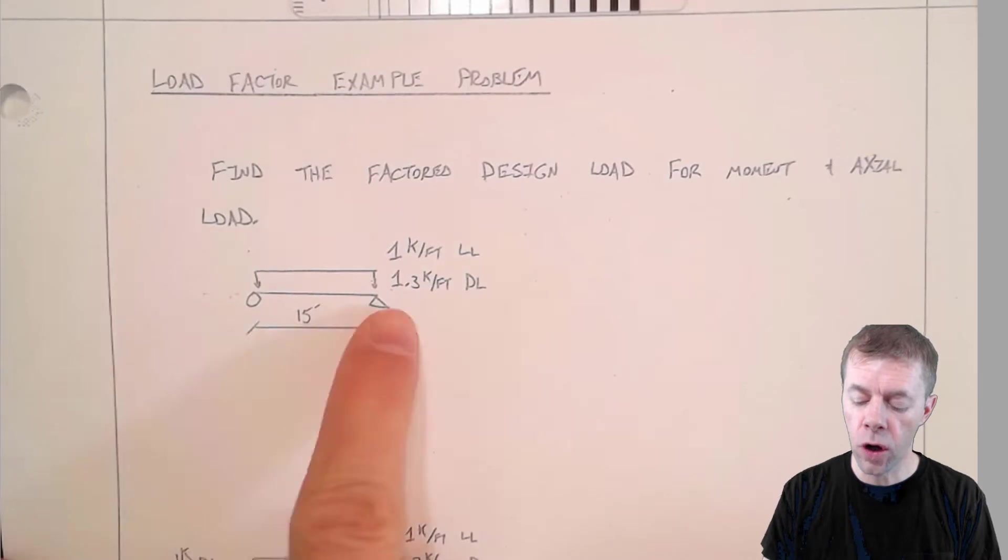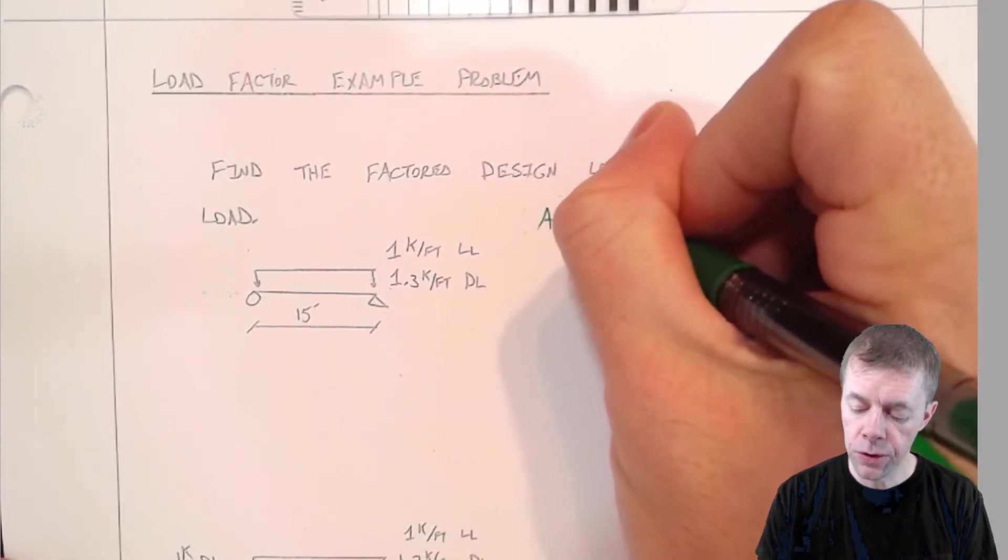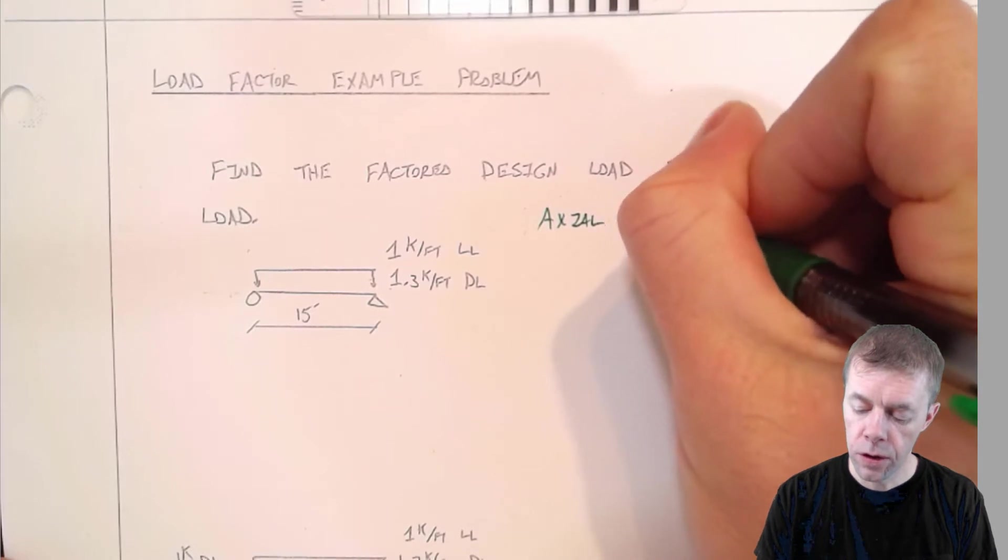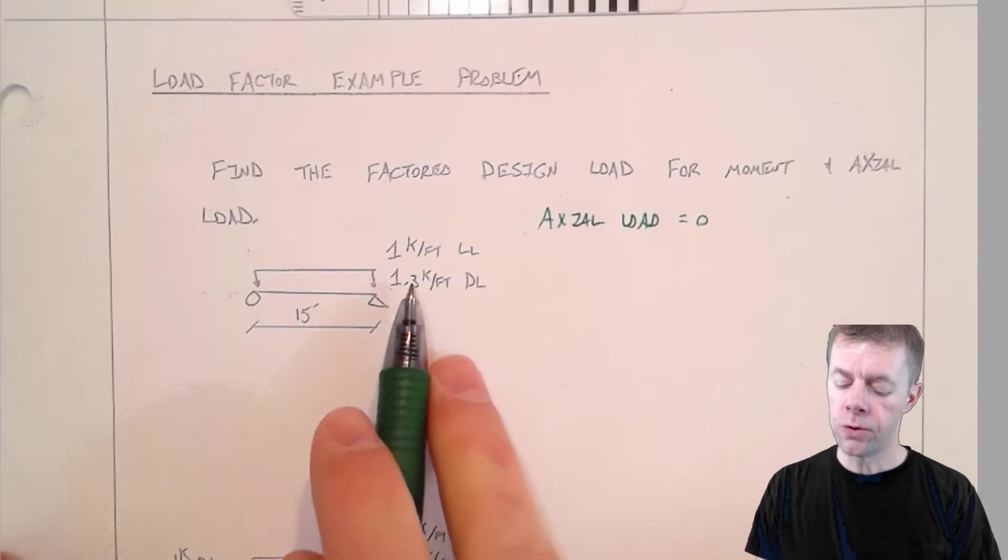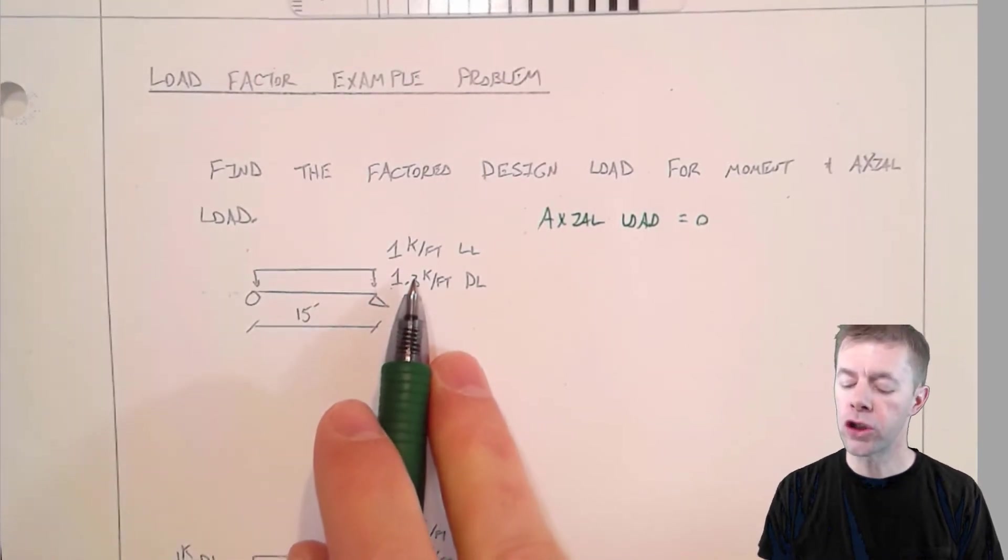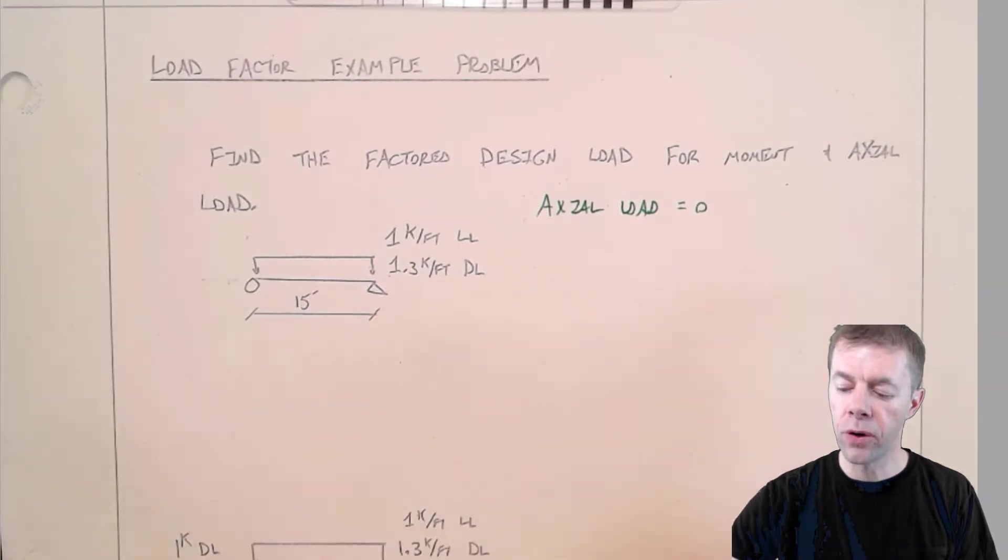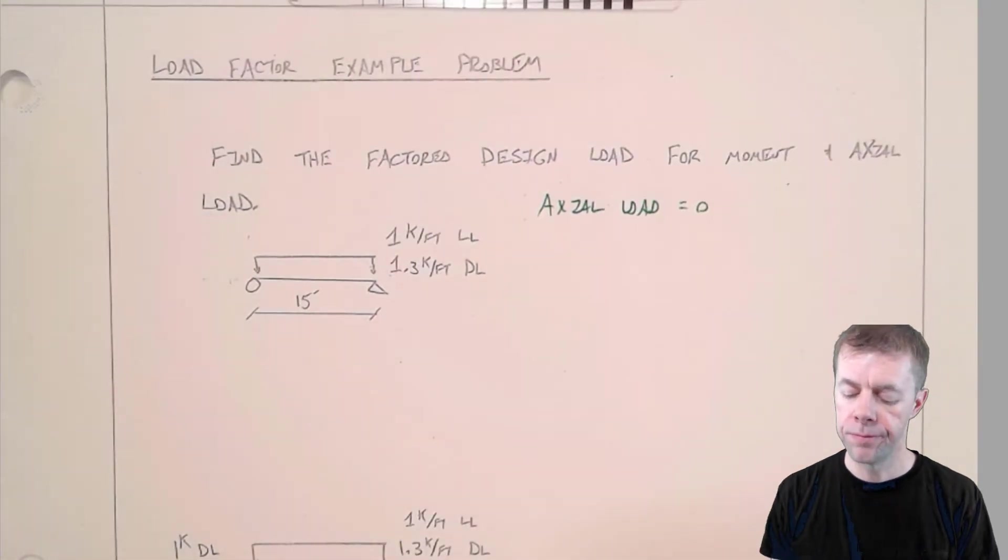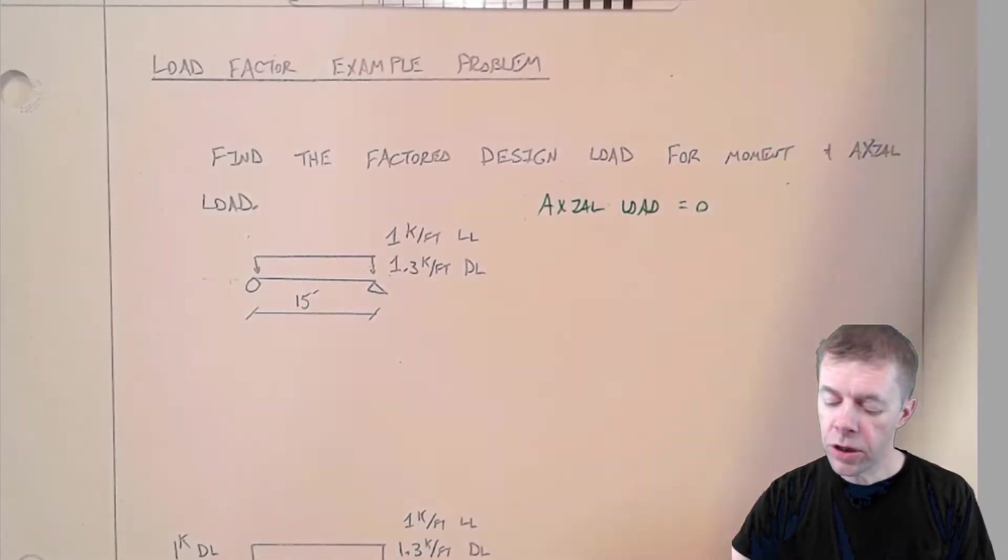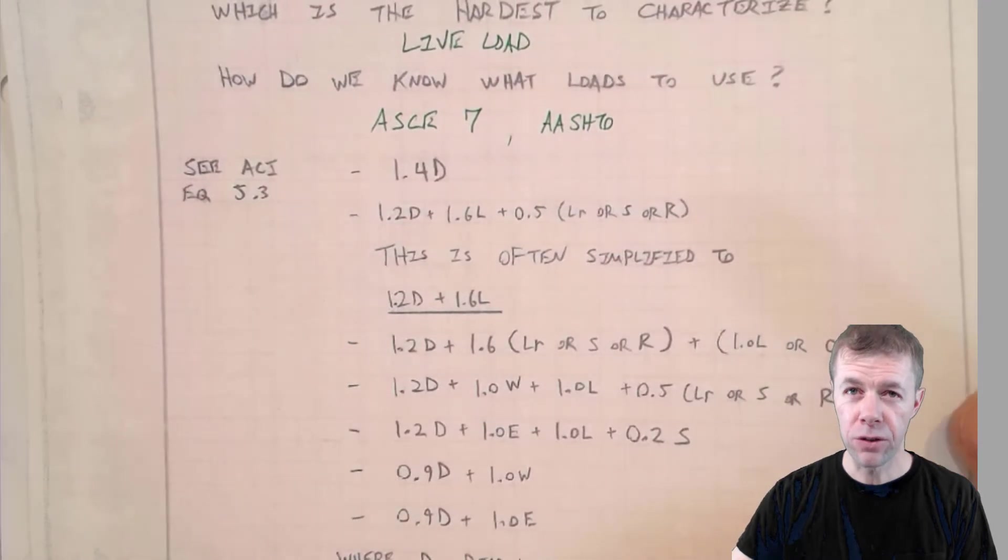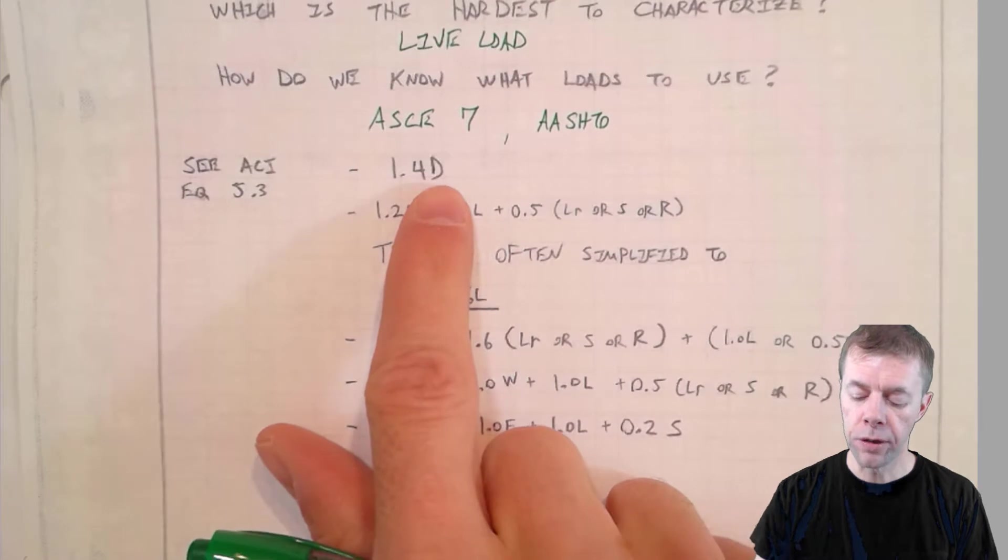First of all I can see there is no axial load on this problem, so I'm not worried about that. Axial load equals zero for this one. Now let's start with these loads. What we're going to do is transform these live loads and dead loads into another equivalent load. To do that we're going to be using these load factors that I talked about in a previous video.